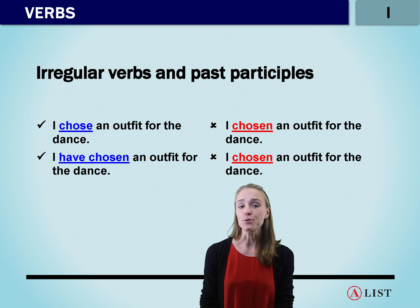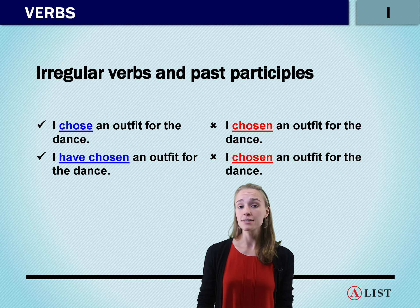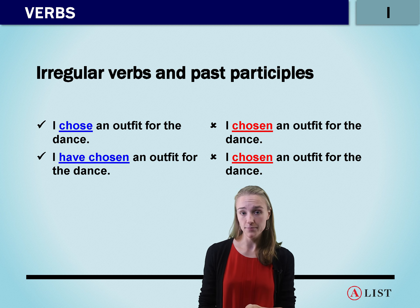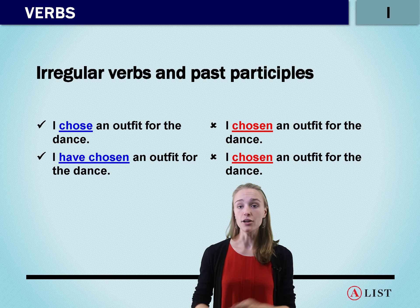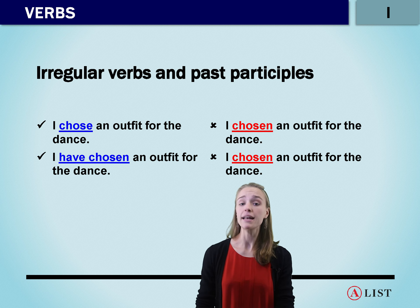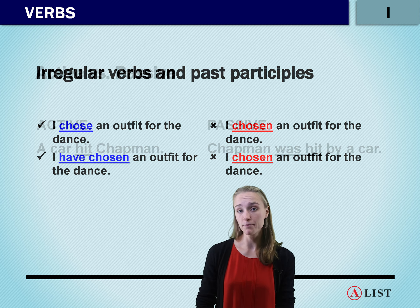If we were going to do the word 'freeze,' we would say 'freeze,' 'froze,' or 'had or have frozen.' Again, notice that we need to say 'had or have' before 'frozen,' and 'had or have' before 'swum.'